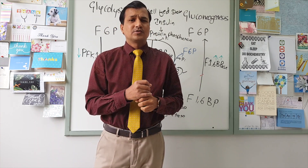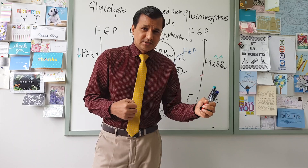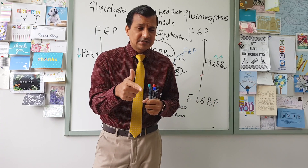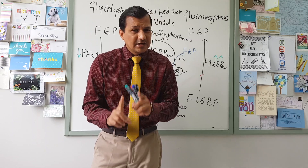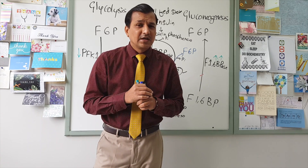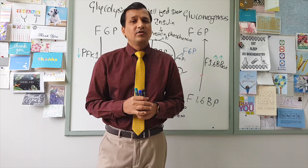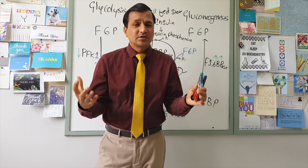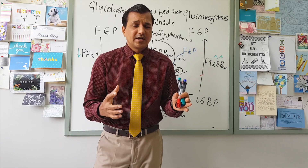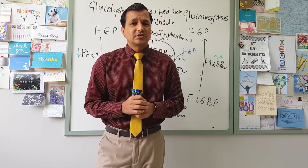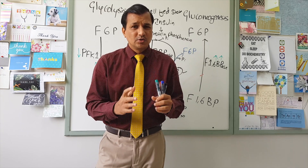Fructose 2,6-bisphosphate simultaneously affects both glycolysis and gluconeogenesis. When fructose 2,6-bisphosphate is increased, glycolysis runs at a higher rate and gluconeogenesis goes down. When fructose 2,6-bisphosphate decreases, glycolysis goes down and gluconeogenesis goes up. This is how the concentration of fructose 2,6-bisphosphate regulates both pathways — serving as the main regulatory point controlled by insulin and glucagon through the bifunctional enzyme.